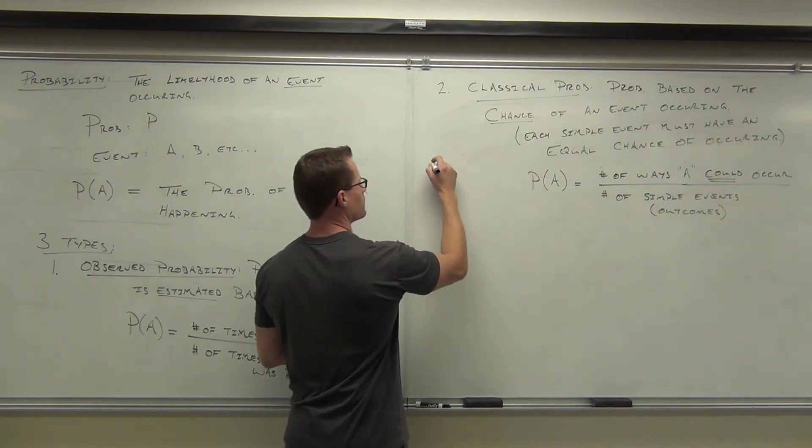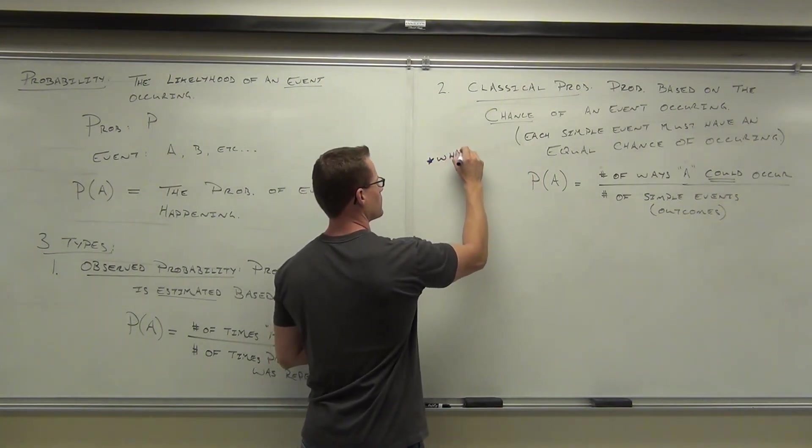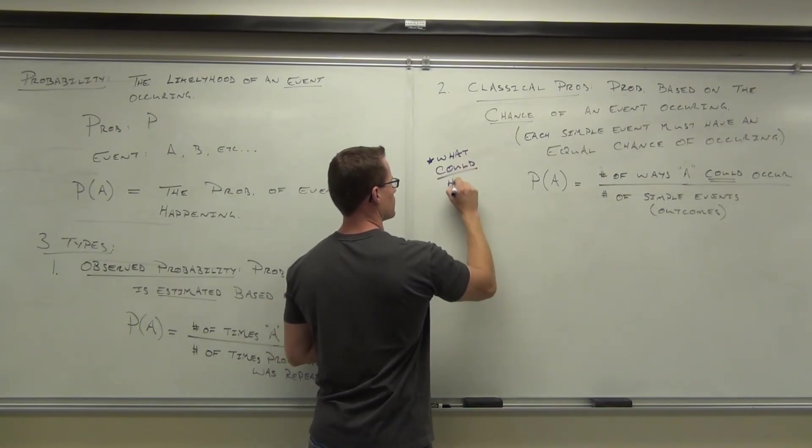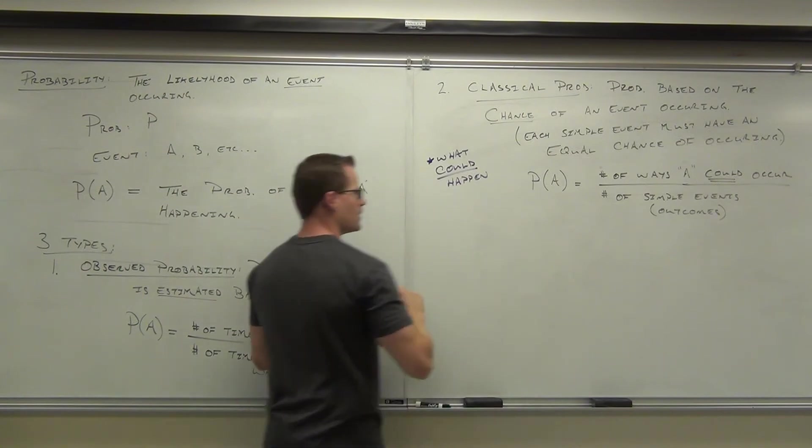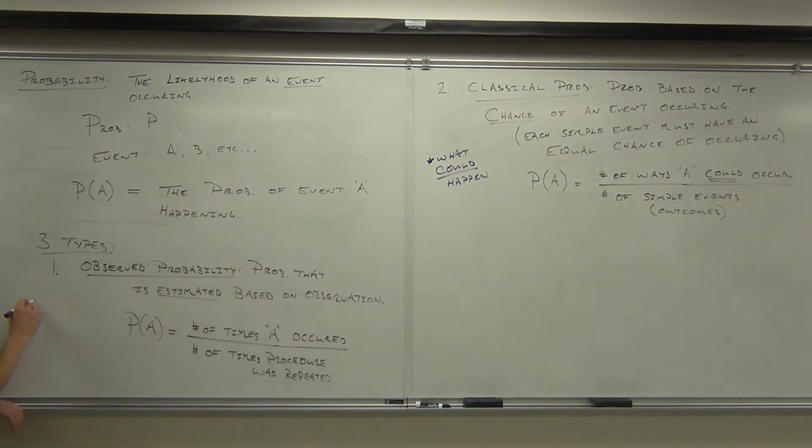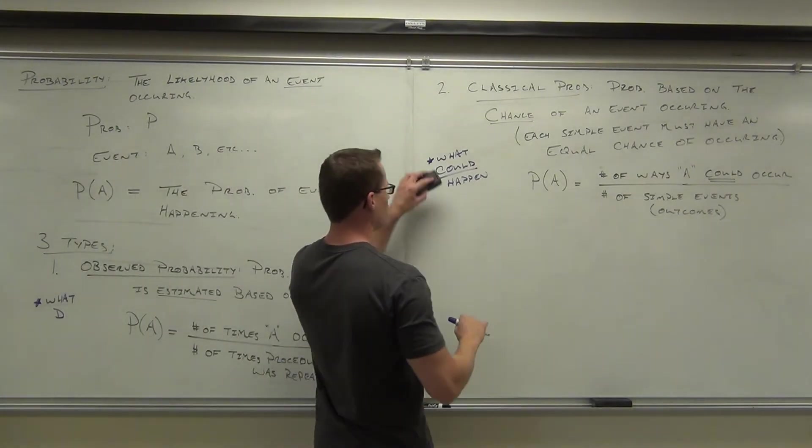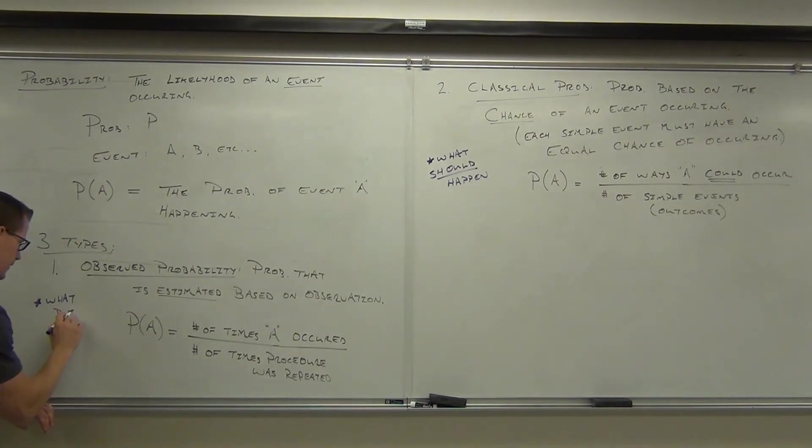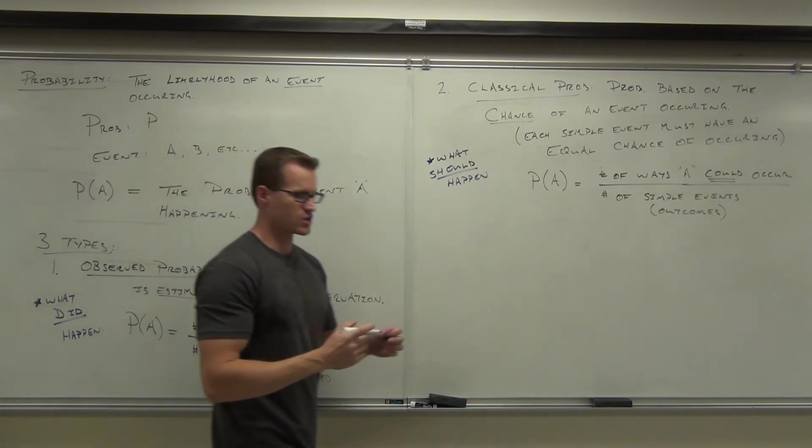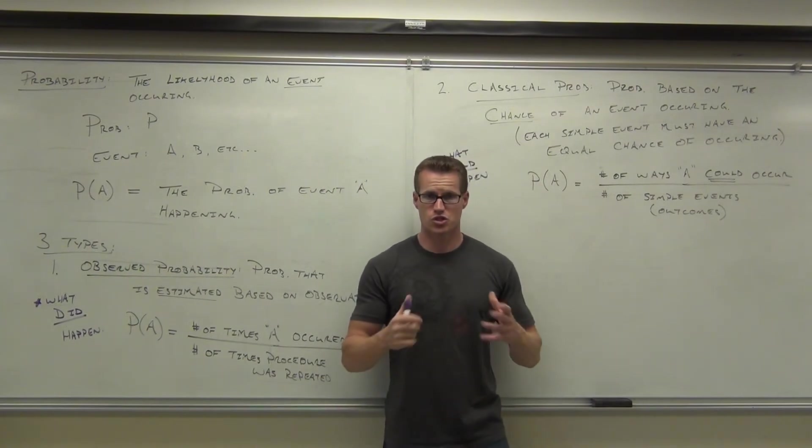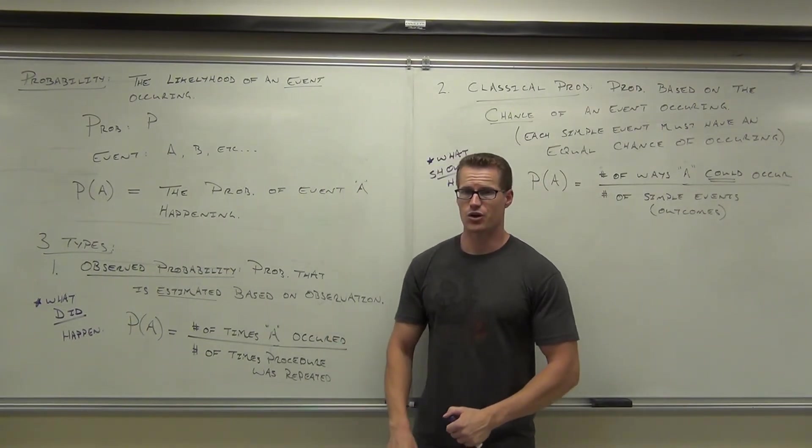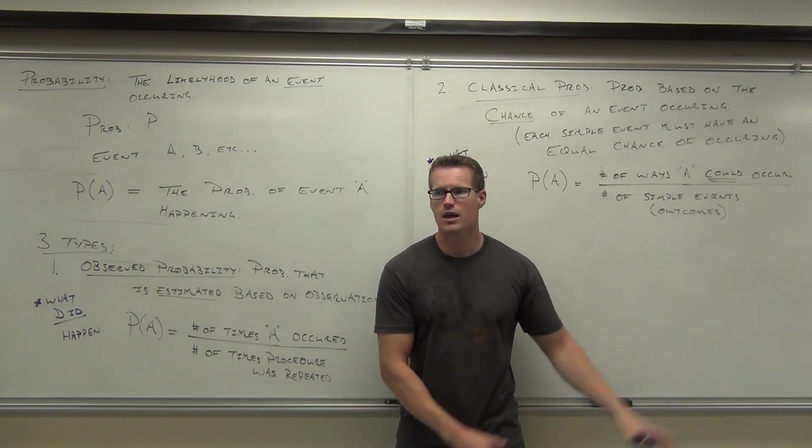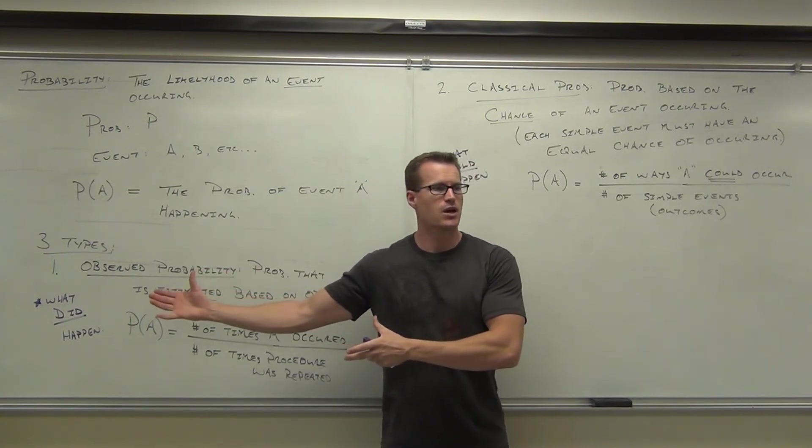This is what should happen. This is what did happen. Last time I'm going to use this example, but if you flip a coin ten times, what should you get? You should get five heads, five tails. If you actually did it, are you going to get five heads, five tails? Maybe, maybe not. If you do the observation, you might get six heads and four tails. That's what did happen. So that's the difference.